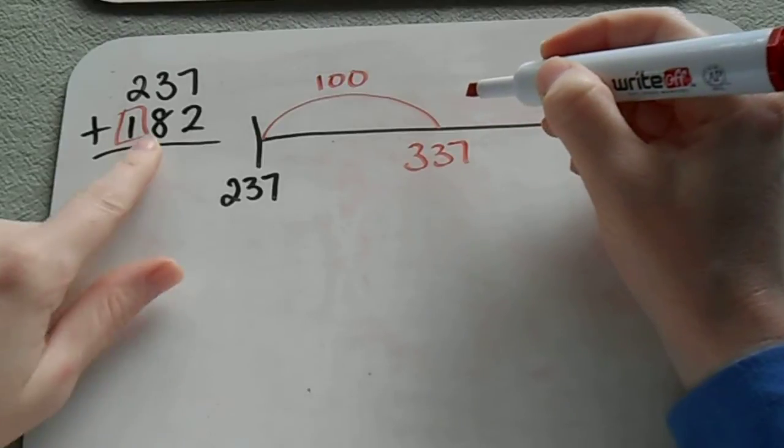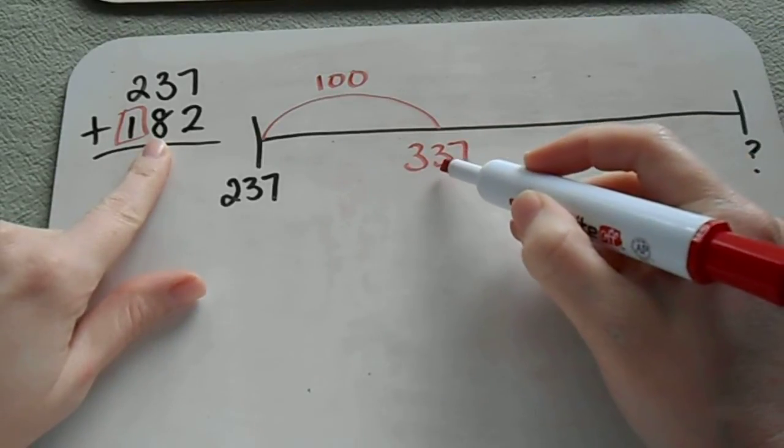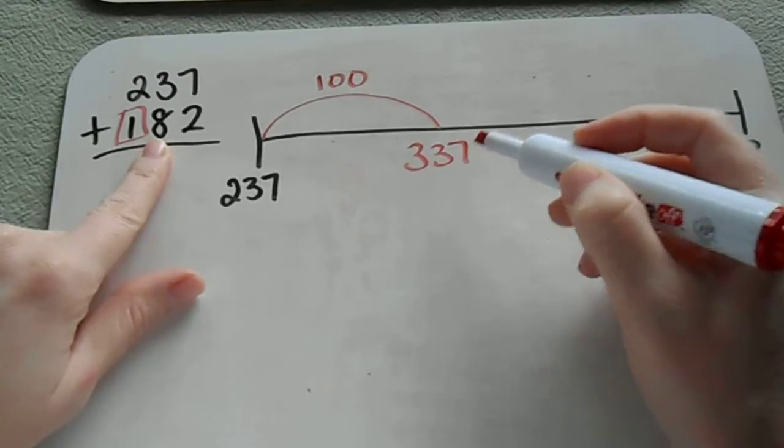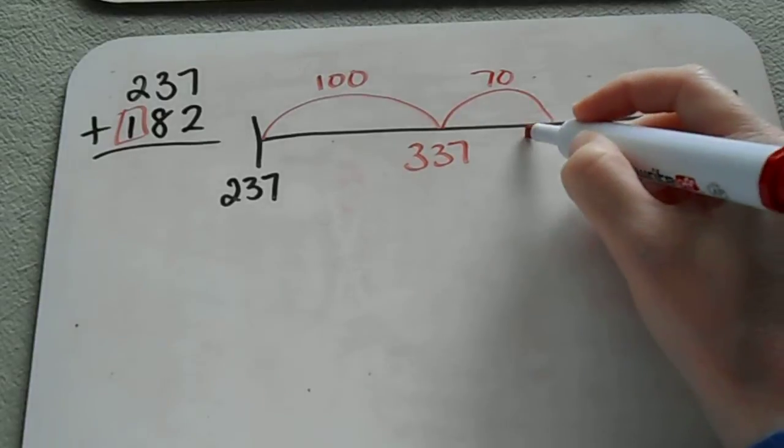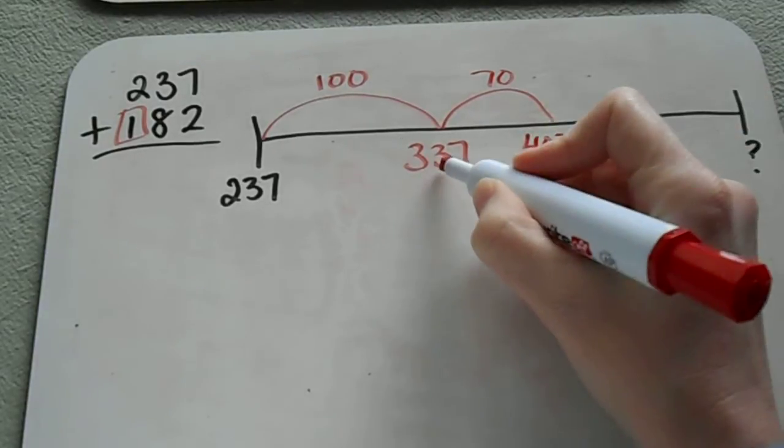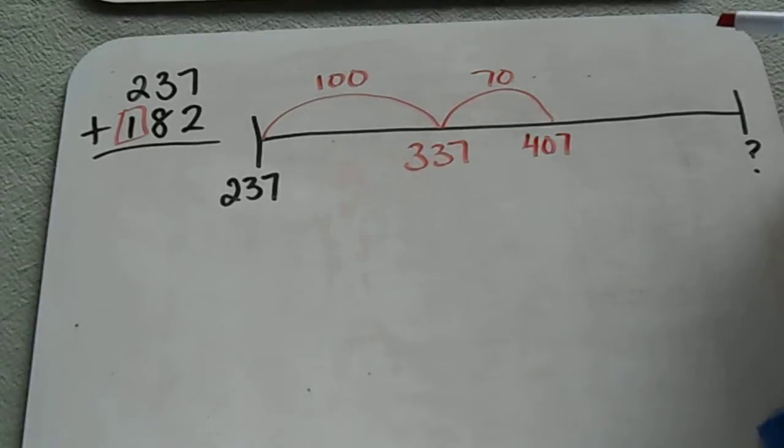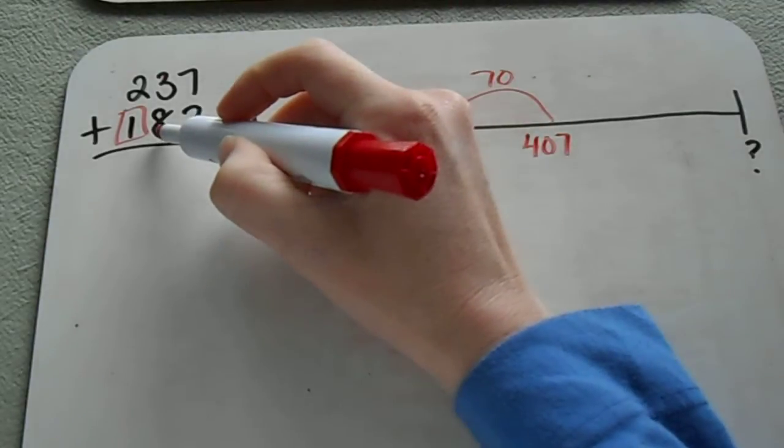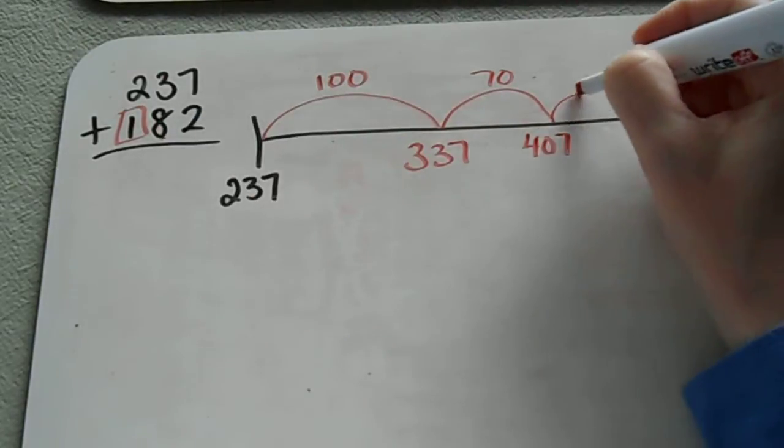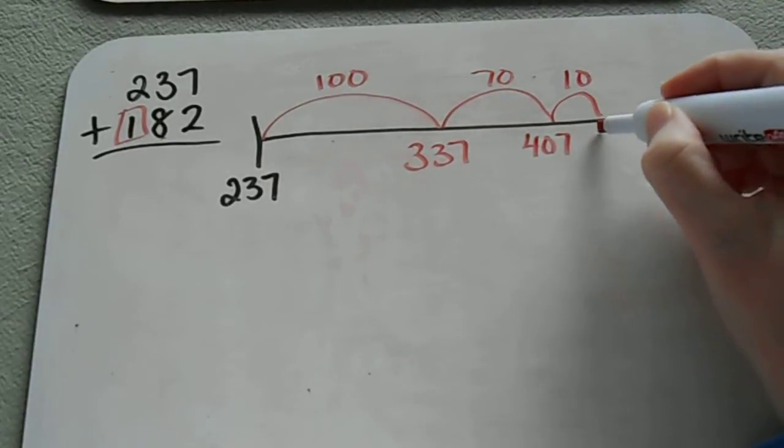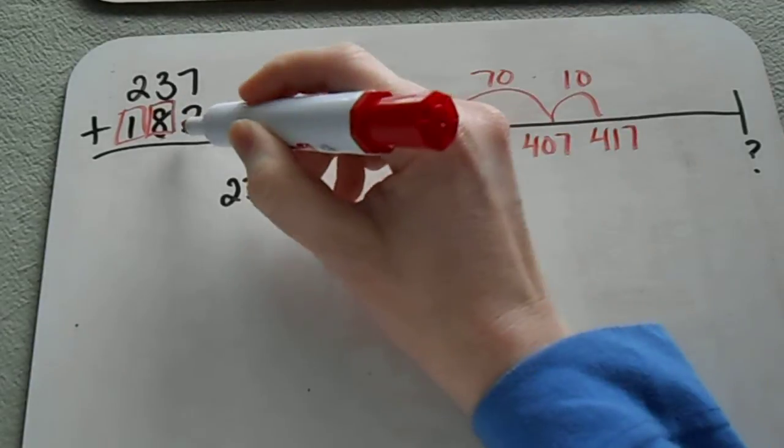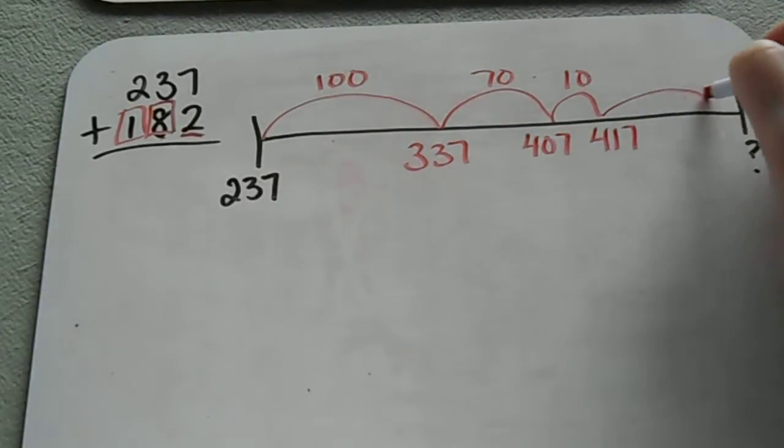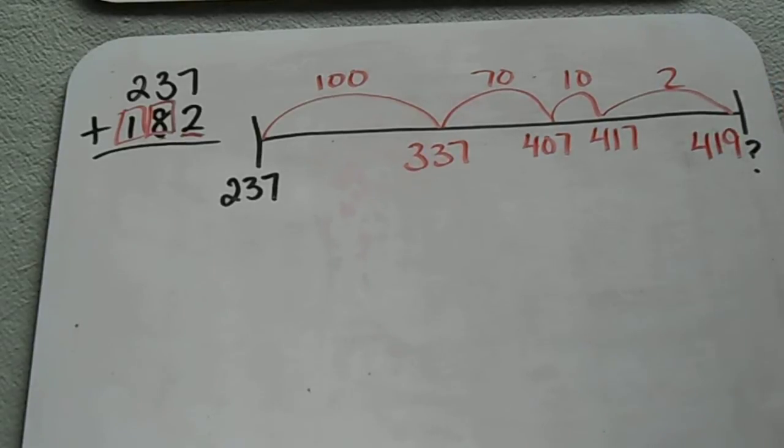And then I'm going to actually break up these tens because that will make it a little bit easier for me. I know that 70 or 7 tens will put me at the next hundreds place. So that's going to give me 407. And then I know that since I only use 7 of those tens, I need another 10 to put me at 417. So I used my tens place. And now I can just add in my ones place of 2 to get 419.